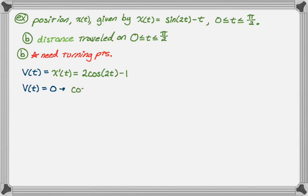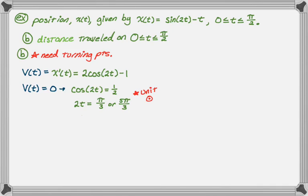There are two places on the unit circle where cosine equals one-half: quadrant one and quadrant four. So 2t could be equal to π/3 or 5π/3, which means t equals π/6 or 5π/6. But we have to be between zero and π/2, and 5π/6 is definitely not in that interval, so we get rid of it. The only turning point between zero and π/2 is at t = π/6.